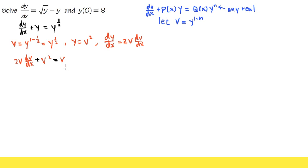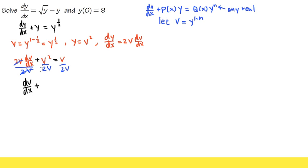This is what we have now, and this is going to be linear. To see the linear differential equation clearly, we need to isolate dv/dx, so let's divide everything by 2v. We get dv/dx plus 1/2 v equals 1/2. Now this is the usual linear equation that we know how to solve.